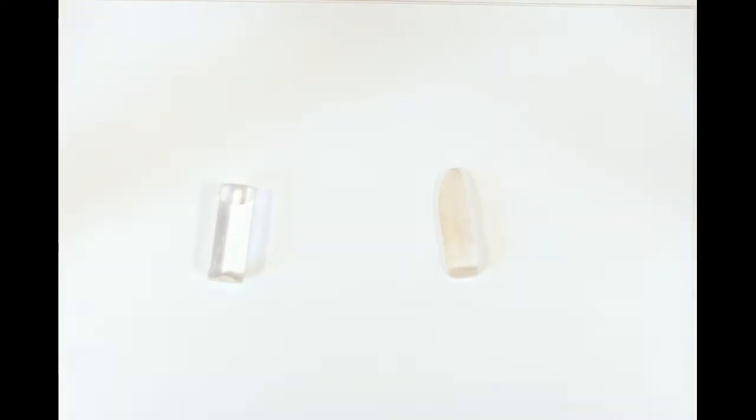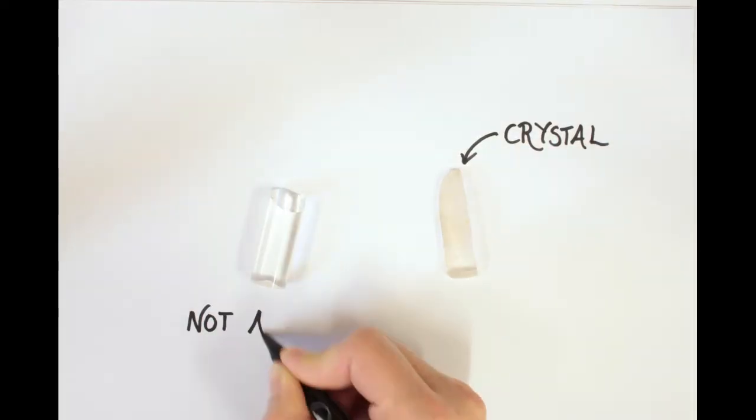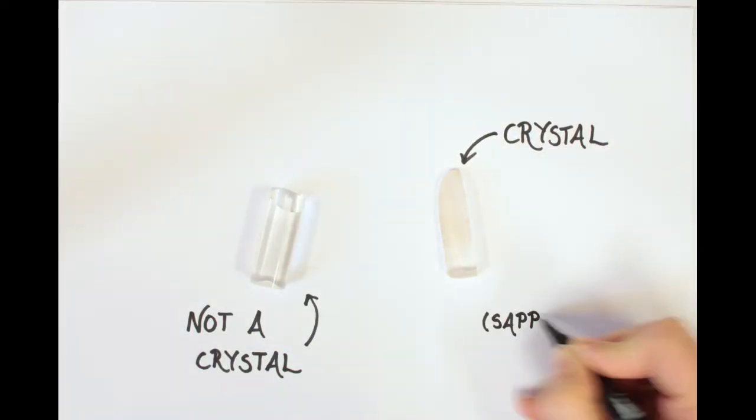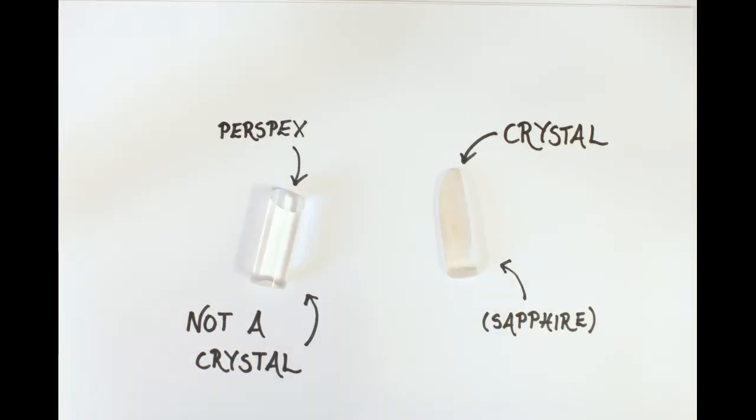Only one of these is a crystal. This is a crystal, but this is not a crystal. What's the difference? What makes something a crystal? It's not the fact that it's shiny or that it's a particular shape or color.